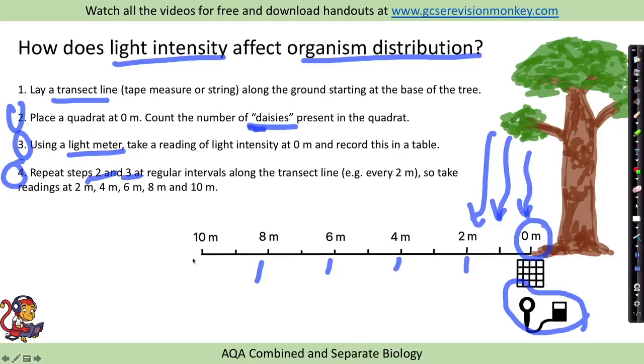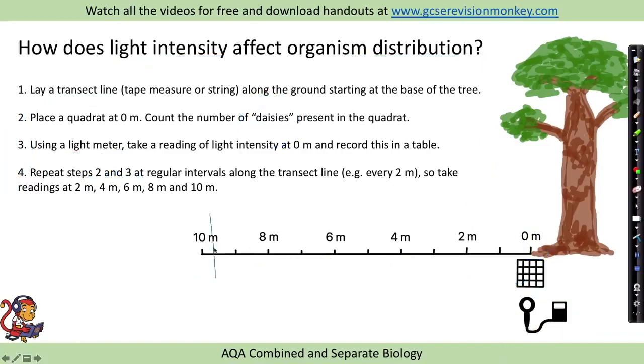So we'd place our quadrat and our light meter here, here, here, here, here, each time counting the number of organisms, for example daisies or whatever we were looking at and calculating the light intensity. Now I want you to imagine that we're sampling in a woodland and along the transect, away from the tree, there's lots of long plants and long grasses.